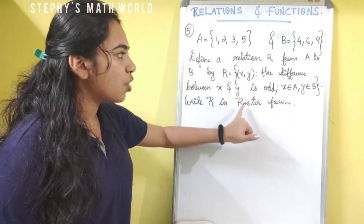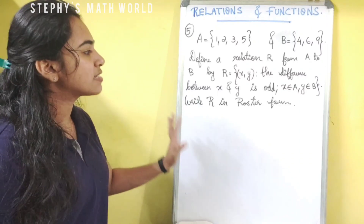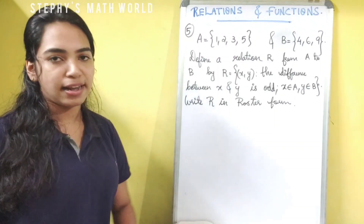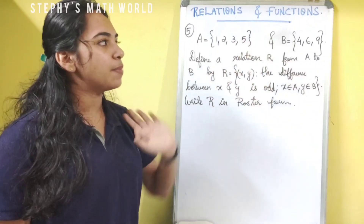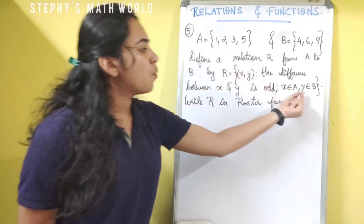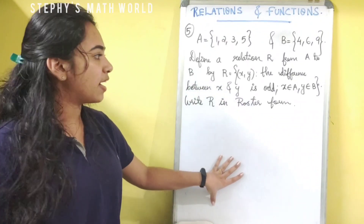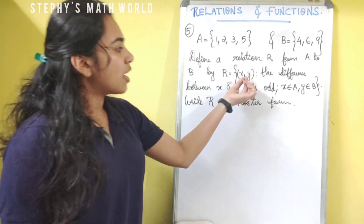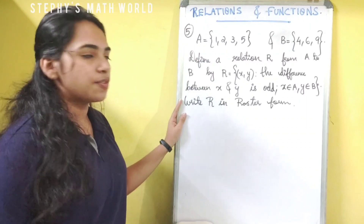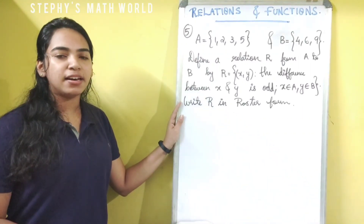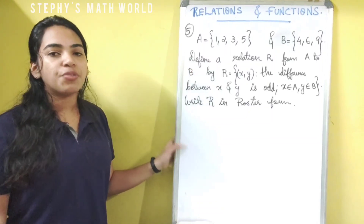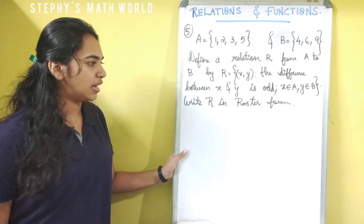R is equal to the set of all ordered pairs (x, y) such that the difference between x and y is odd, where x belongs to A and y belongs to B. That's why x is the first term — all first terms come from A. Now we can write in roster form. We will write it in roster form and find the domain and range.